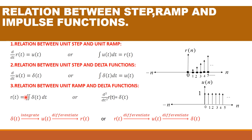Next we are going to see the relation between step, ramp, and impulse functions. First, the relation between unit step and unit ramp: differentiation of the ramp signal is equal to the unit step signal. The difference between ramp values at consecutive points (0 to 1, 1 to 2, 2 to 3) is always 1, giving the unit step. Conversely, integration of u(t) dt = r(t) — adding up the step values gives the ramp. So: differentiation of ramp = unit step, and integration of unit step = ramp.